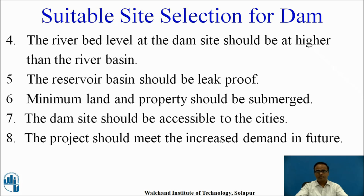Minimum land and property should be submerged while considering the site selection for dam. The dam site should be accessible to cities, so that the time required for distribution of water will be less and cost will also be reduced. The project should be such that it meets the increased demand of water in future, considering the next 50 to 75 years span of life of the dam, so that storage of water can serve the growth of population for the next 50 to 75 years.